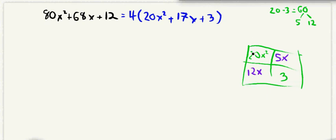So looking here, the greatest common factor between 12 and 20 is going to be 4. We can pull out a 4, and because they both have an x, we can also pull out an x.